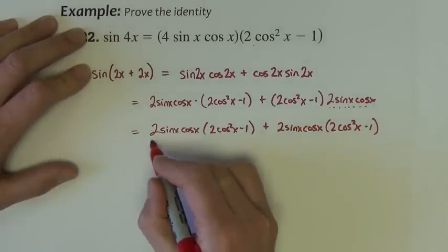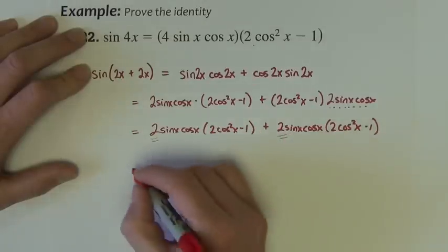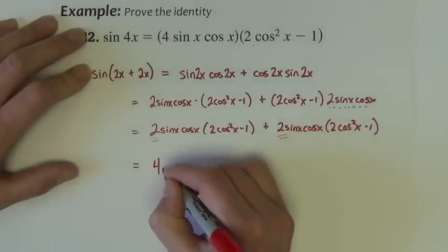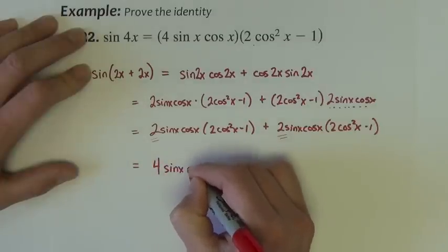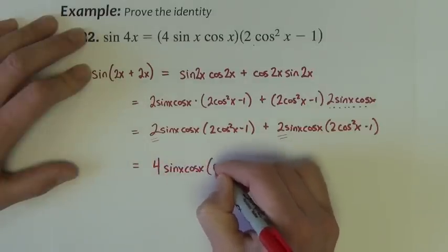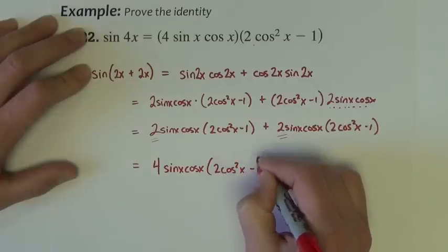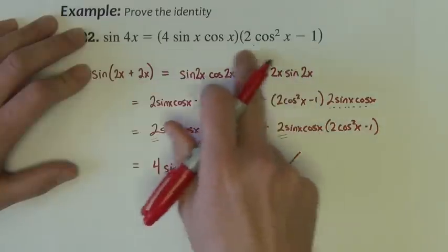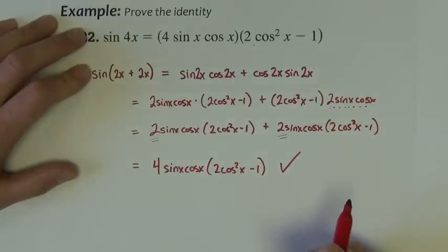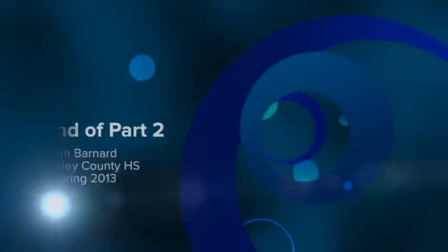I've got 2 here, 2 here, add them together and you get 4 sine x cosine x times the quantity 2 cosine squared x minus 1. And that's what we wanted.